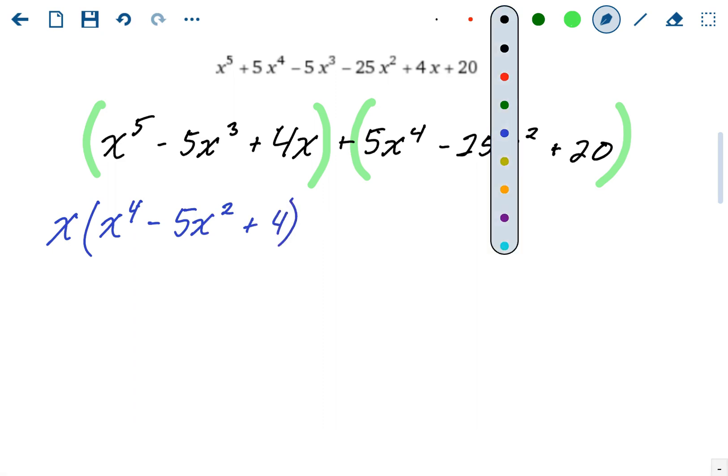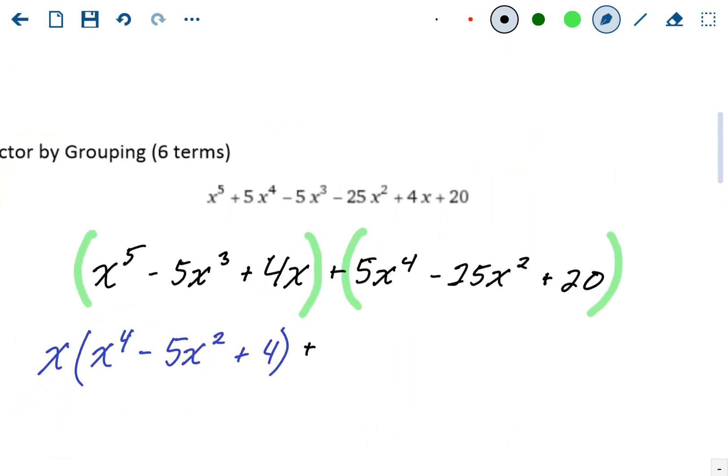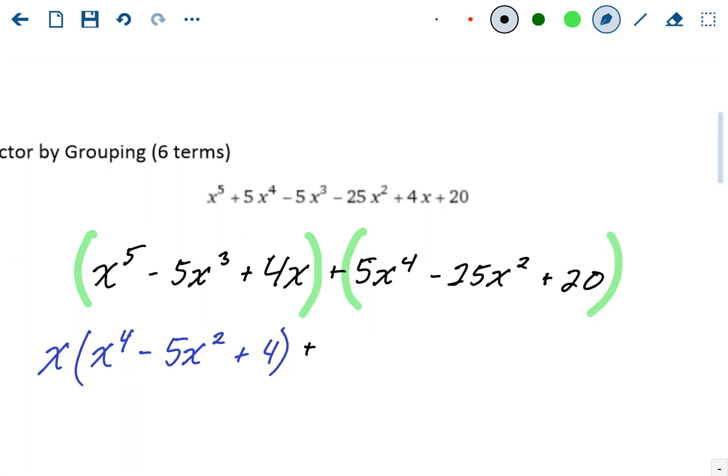And then you go to the next group and try and find a GCF there. The greatest common factor in the next group, they don't all have an x. So we can't take out any variables. But they all are divisible by 5. So we're going to factor out a 5.